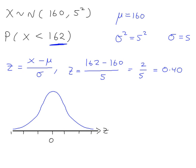I've got 0.4 there, and what I'm trying to work out here is the probability that z is less than 0.40.